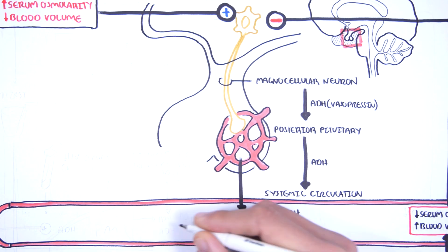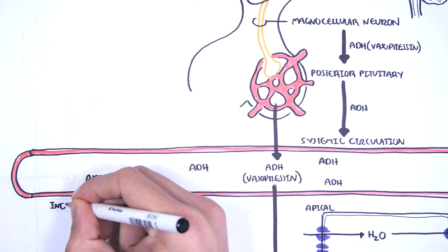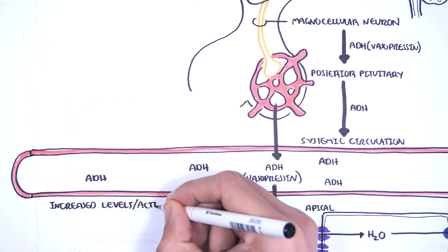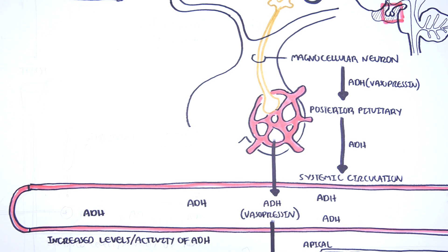SIADH is syndrome of inappropriate secretion of ADH, resulting in a lot of ADH in the blood, in the serum, and also increases the ADH activity.